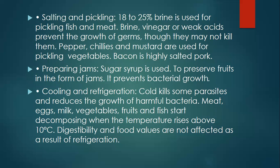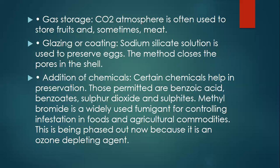Cooling and refrigeration: Cold kills some parasites and reduces the growth of harmful bacteria. Meat, egg, milk, vegetables, fruits, and fish start decomposing when the temperature rises above 10 degrees. Digestibility and food flavors are not affected as a result of refrigeration. Gas storage: Carbon dioxide atmosphere is often used to store fruits and sometimes meat. Glazing or coating: Sodium silicate solution is used to preserve eggs. The method closes the pores in the shell.